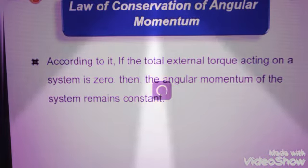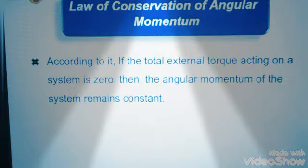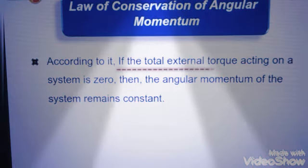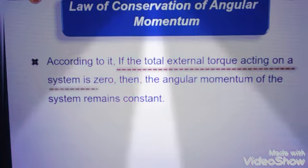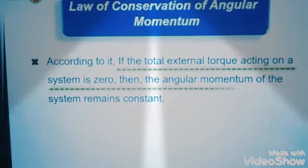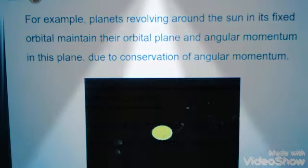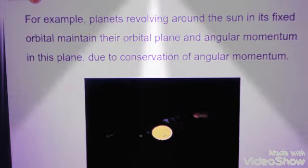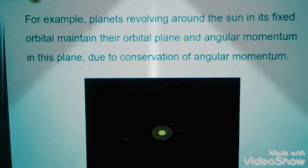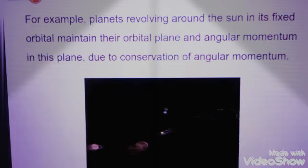According to the law of conservation of angular momentum, if the total external torque acting on a system is zero, then the angular momentum of the system remains constant. This law of conservation of angular momentum can be observed in the orbital motion of the planets around the sun.